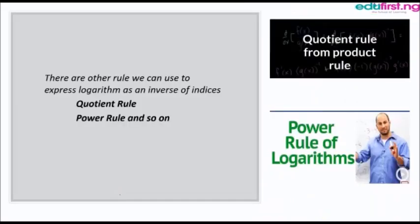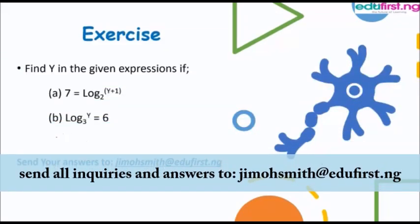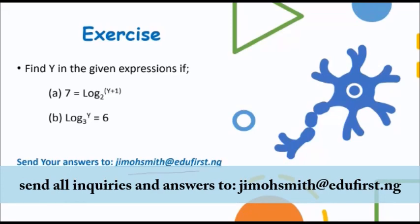There are more rules we can use to express logarithm as an inverse of indices, such as the quotient rule and the power rule, but we will stop here for today. We have a simple exercise: find Y where 7 equals log of (Y plus 1) to base 2, and also find Y where Y to base 3 equals 6. You can send your answers and questions to the email displayed below. Thank you.